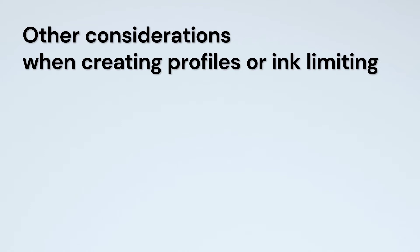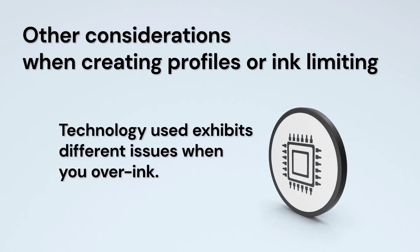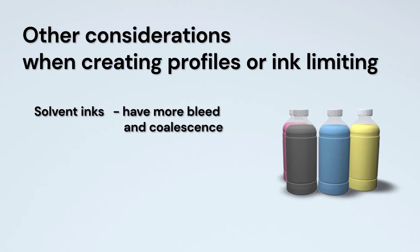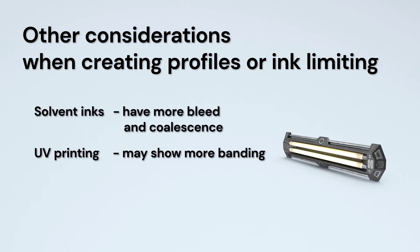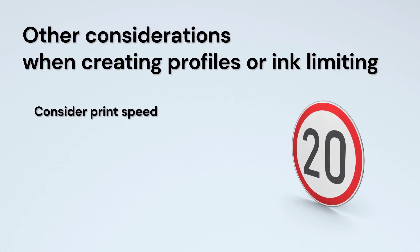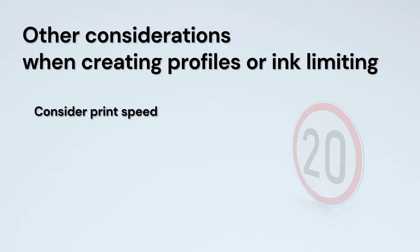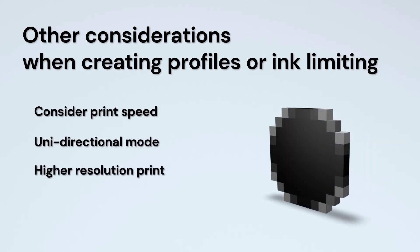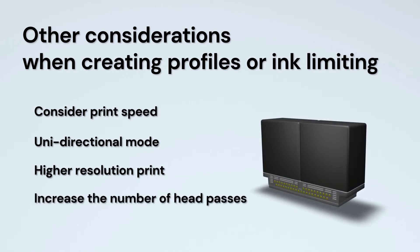There are several additional items to consider when creating profiles or ink limiting. The technology used tends to exhibit different issues when you over-ink. Solvent inks will have more bleed and coalescence. UV printing may show more banding, and DTG and DTF can have issues with color mixing with the white. Consider print speed — all ink printers can print better quality when printing slower. Unidirectional mode will always print less grainy than bidirectional. A higher resolution prints more passes and reduces banding. You may also have a printer option to increase the number of head passes.